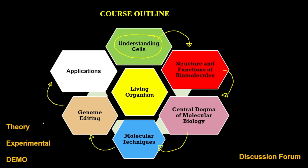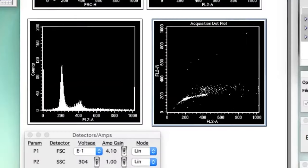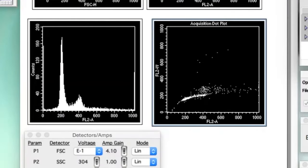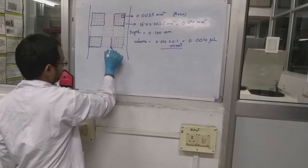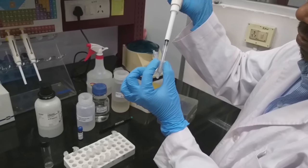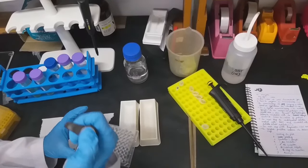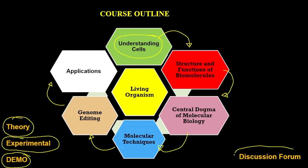For every topic, we are going to cover the theory component and discuss experiments. For example, when discussing cell cycle and cell division, we'll talk about how different stages can be studied using flow cytometry. We'll also have some experimental setups, take you to the lab, and show you demos. Apart from that, there will be a regular discussion forum and live discussions where you can ask your questions.